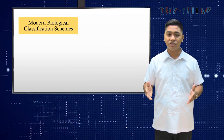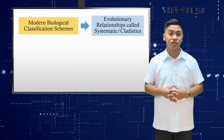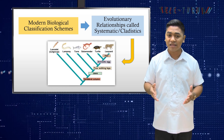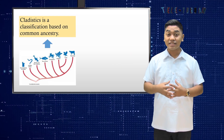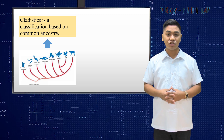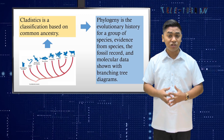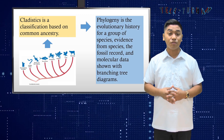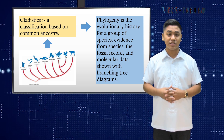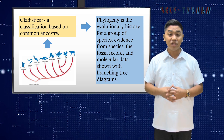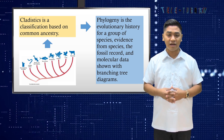Modern classification is based on evolutionary relationships, called systematics or cladistics. Cladistics is a classification based on common ancestry. Phylogeny is the evolutionary history for a group of species, and evidence from species, the fossil record, and molecular data is shown with a branching tree diagram.